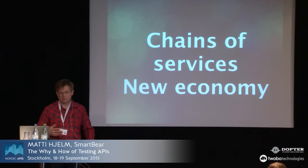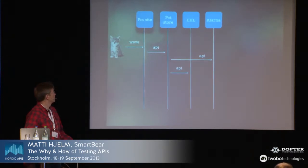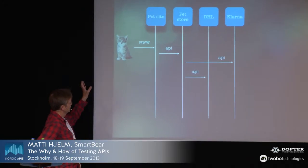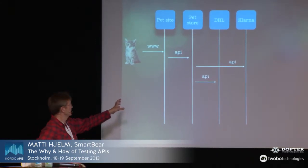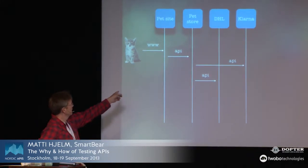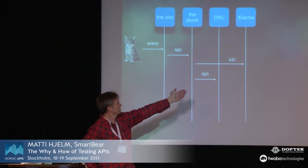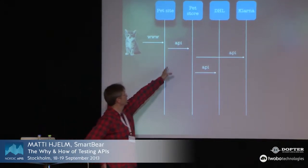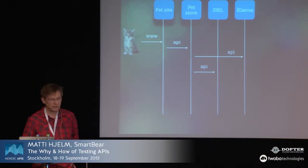And the chains of services — as Andy was talking about in the new economy — if you want to be one of the API suppliers in this economy, you have to make sure your part of the chain is really working, otherwise you will not be part of the game. The cat goes to a pet site, the pet store has an API, they use Klarna for invoicing and DHL for distribution. If you are developing one of these APIs, you have to be able to promise a certain quality of service, and the only way to promise that is to test for it.